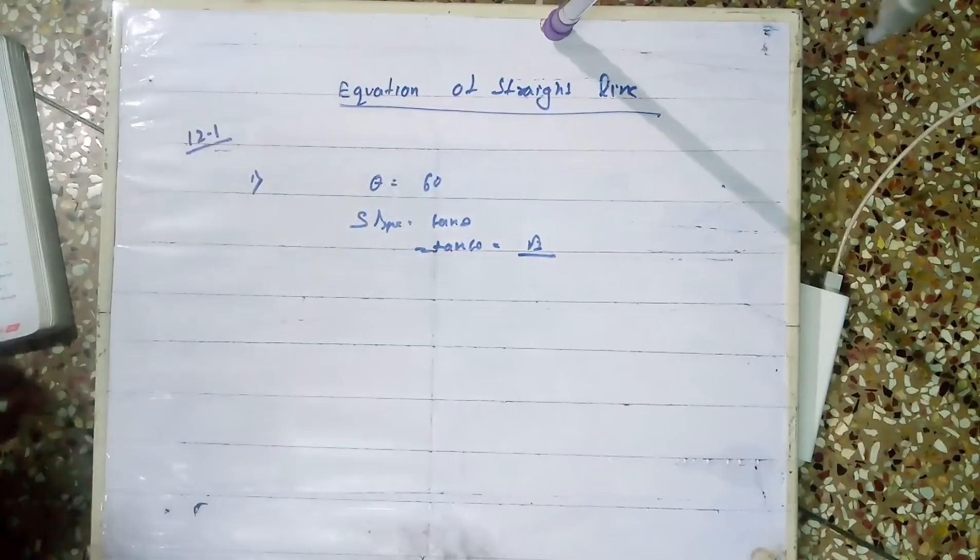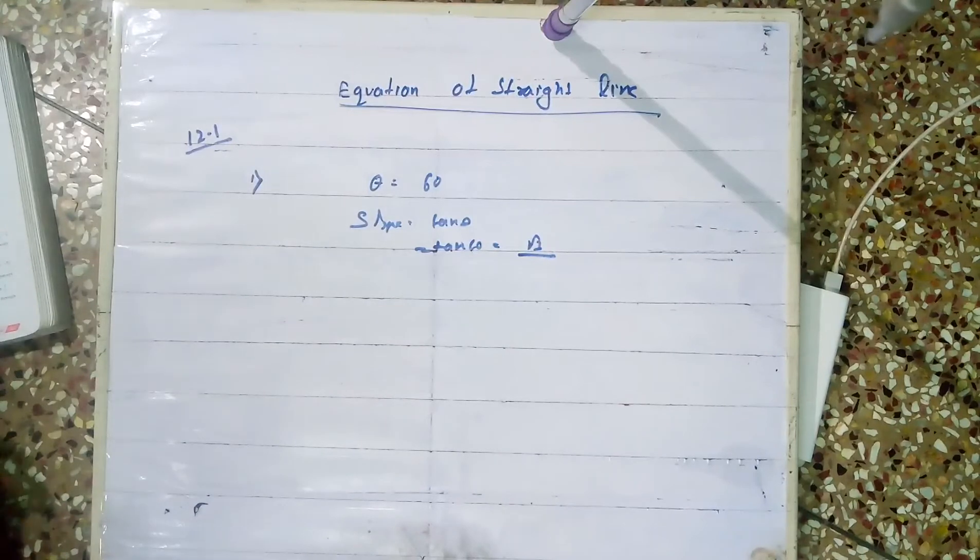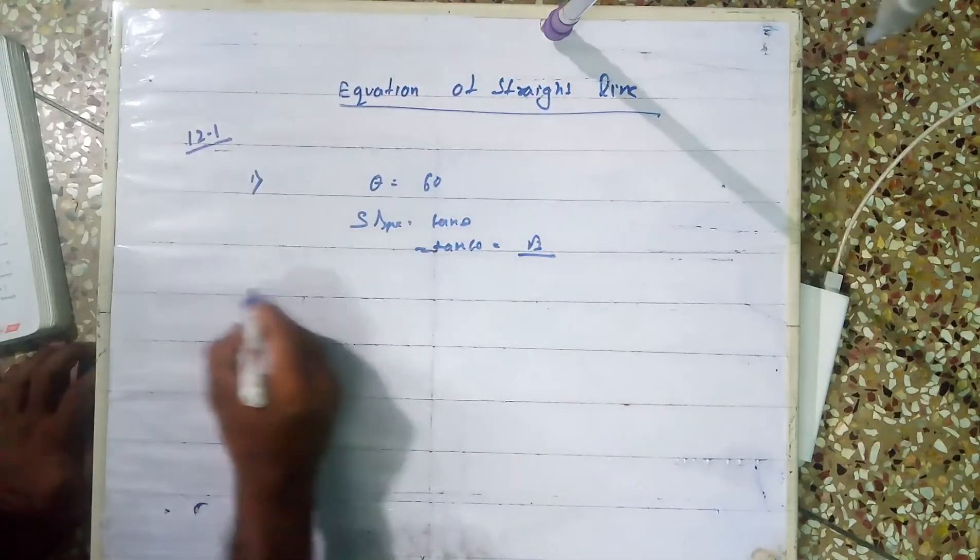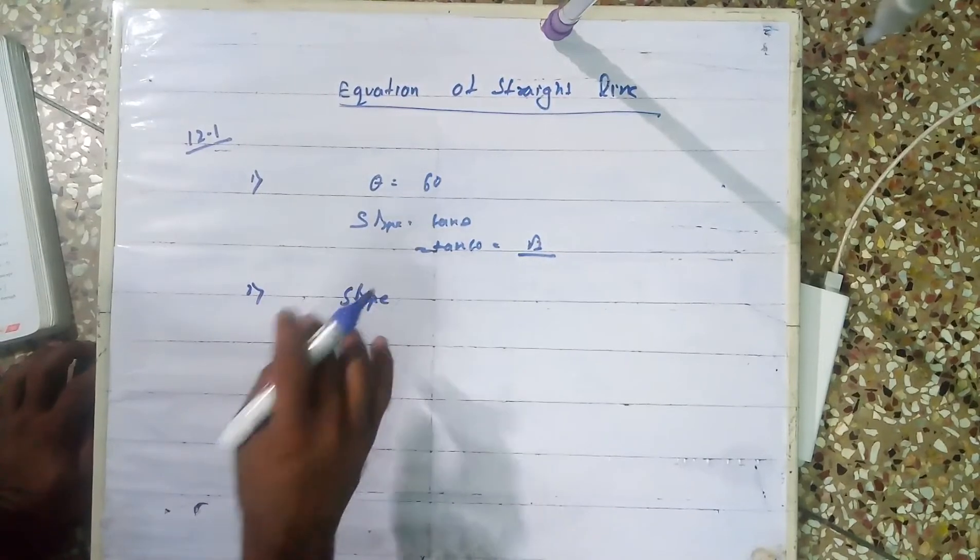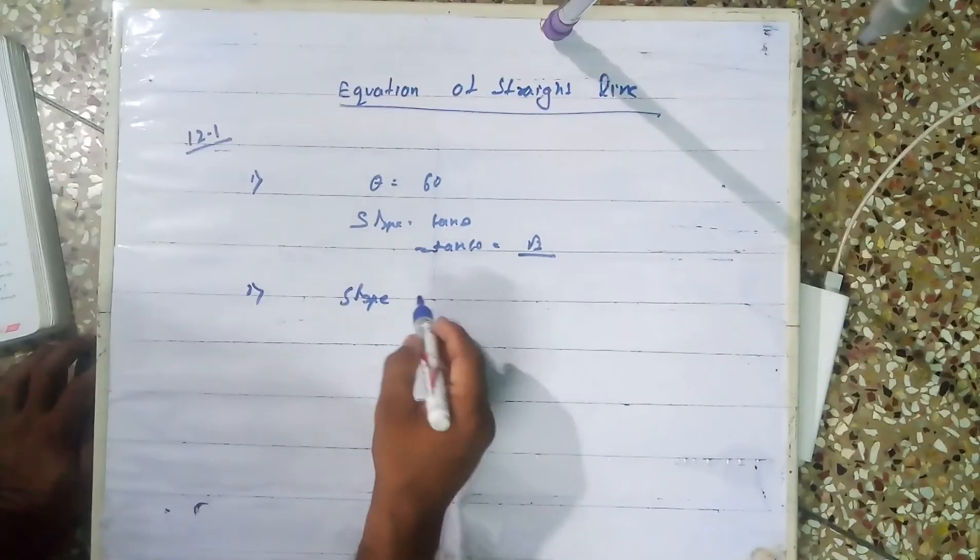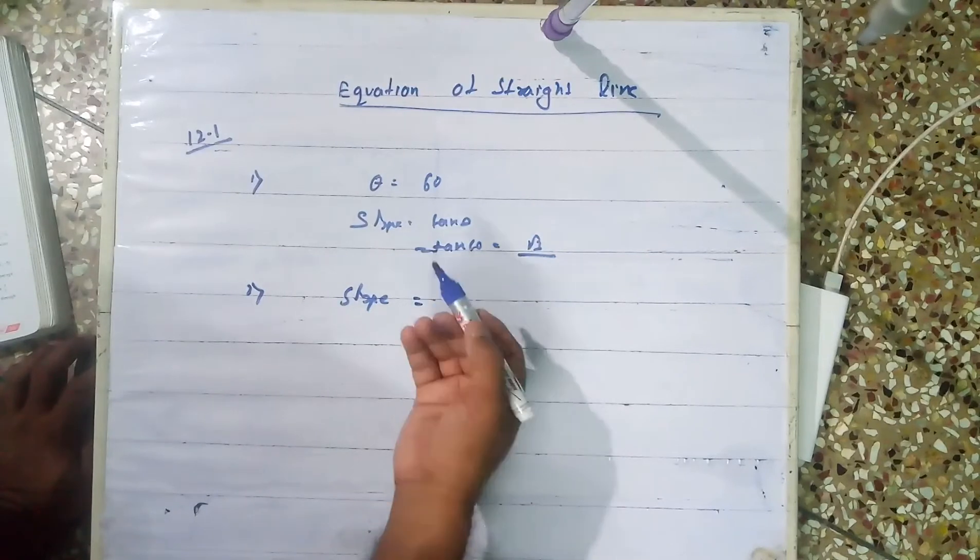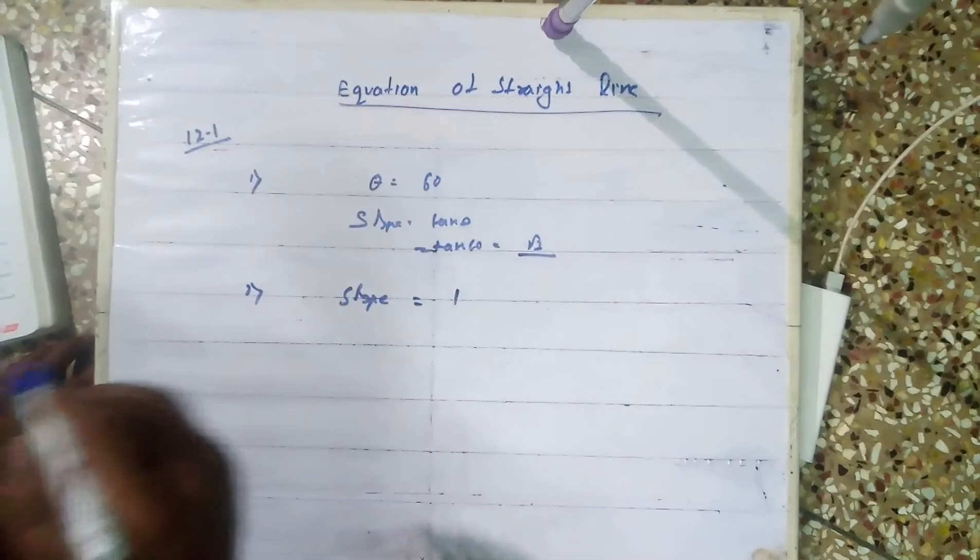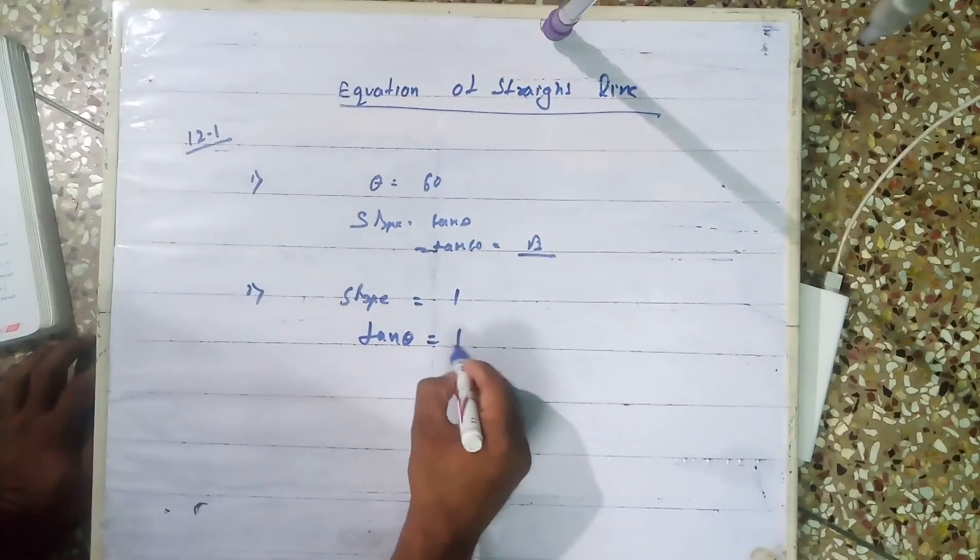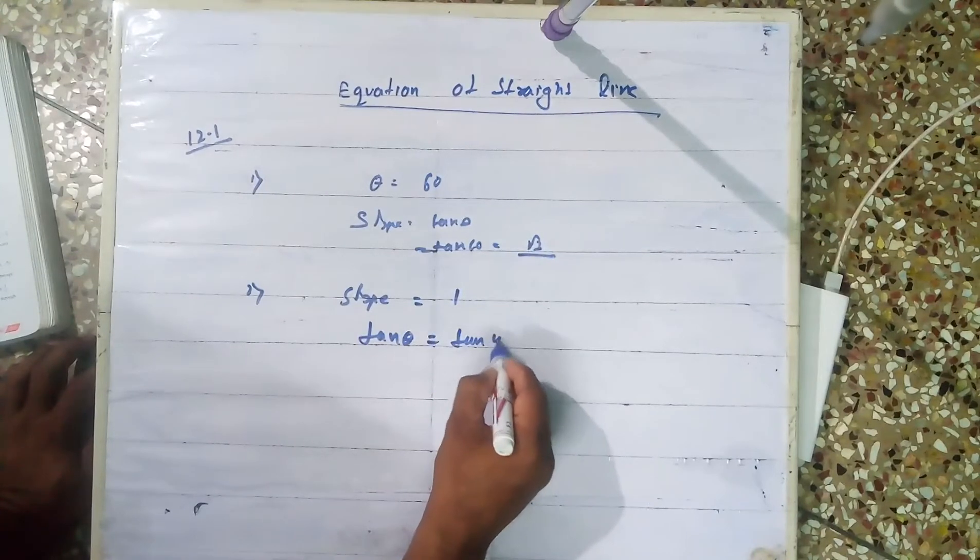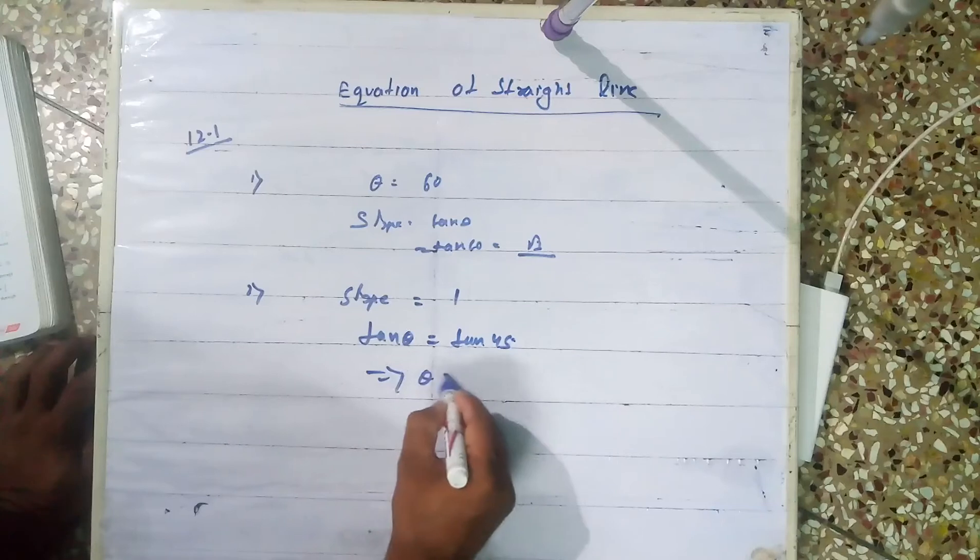Next, number 2: slope is given, find the inclination. I'm not doing the questions exactly as given in the book, I'm doing another one. Suppose slope is 1, then 1 equals tan theta, so theta equals 45 degrees.